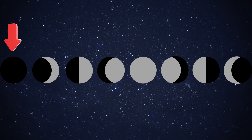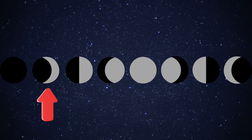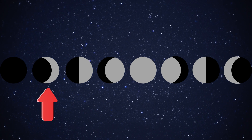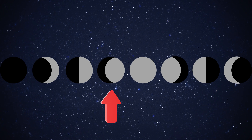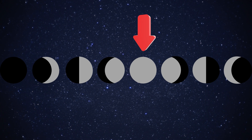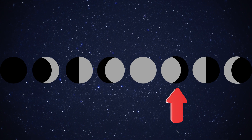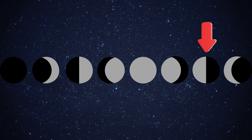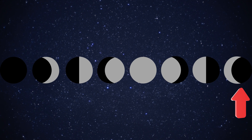New moon. Waxing crescent. First quarter. Waxing gibbous. Full moon. Waning gibbous. Third quarter. Waning crescent. I hope you learned something about the moon today.